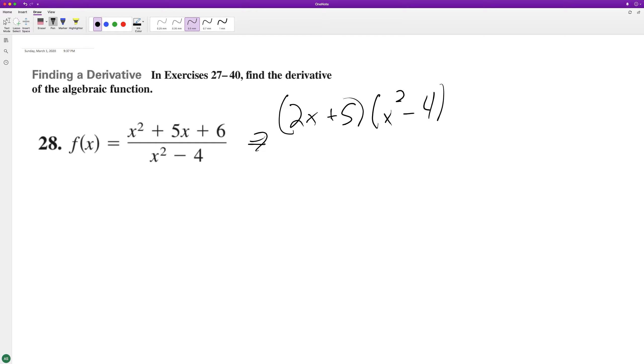x squared minus 4 minus the numerator, x squared plus 5x plus 6, times the derivative of the denominator.